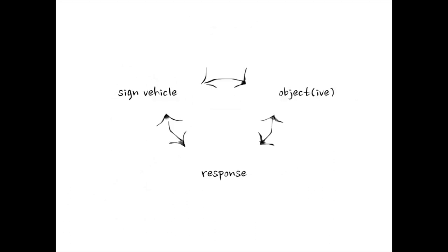Your assignment, if you weren't in class for this presentation, is to identify what the three parts of the sign are for one of these particular examples. You can make a video recording explaining it, write it down and email it, or send it through Telegram. It doesn't matter if you don't get everything right, because some of these things are really hard to figure out — even the instructor isn't always sure how to label each part.